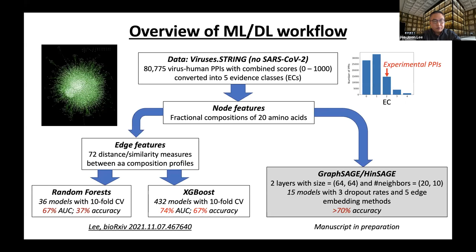Here is an overview of our machine learning and deep learning workflow. We use the VirusSTRING database, which did not include SARS-CoV-2 at the time of analysis. This is a network of virus-human PPIs containing more than 80,000 interactions between about 1,200 virus proteins from 102 virus species and about 8,500 human proteins. Each interaction has a combined score ranging from 0 to 1,000, which we convert into five evidence classes. We focus on experimental PPIs belonging to evidence class 3 or 2 based on 0-indexing.